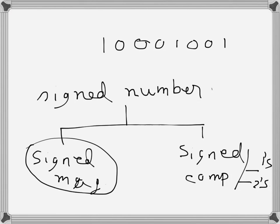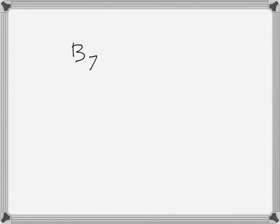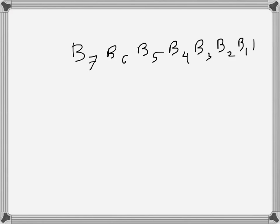Signed two's complement is the most commonly used representation in practice, but first let's talk about signed magnitude representation. In signed magnitude representation, if we take an eight-bit binary number, we can label the bits as b7, b6, b5, b4, b3, b2, b1, and b0. The leftmost bit, or most significant bit, is reserved for sign representation.